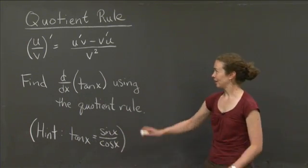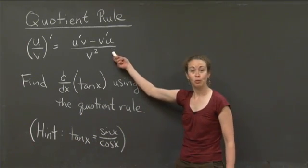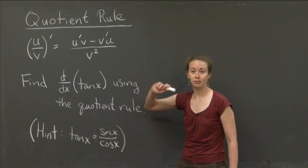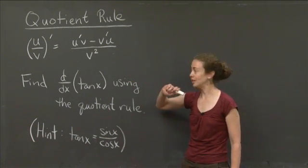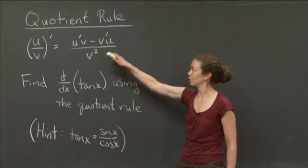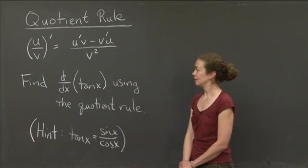What I'd like you to do, I wanted to remind you of what the quotient rule is. So u and v are functions of x. We want to take the derivative of u divided by v. I've written the formula that you were given in class for this.